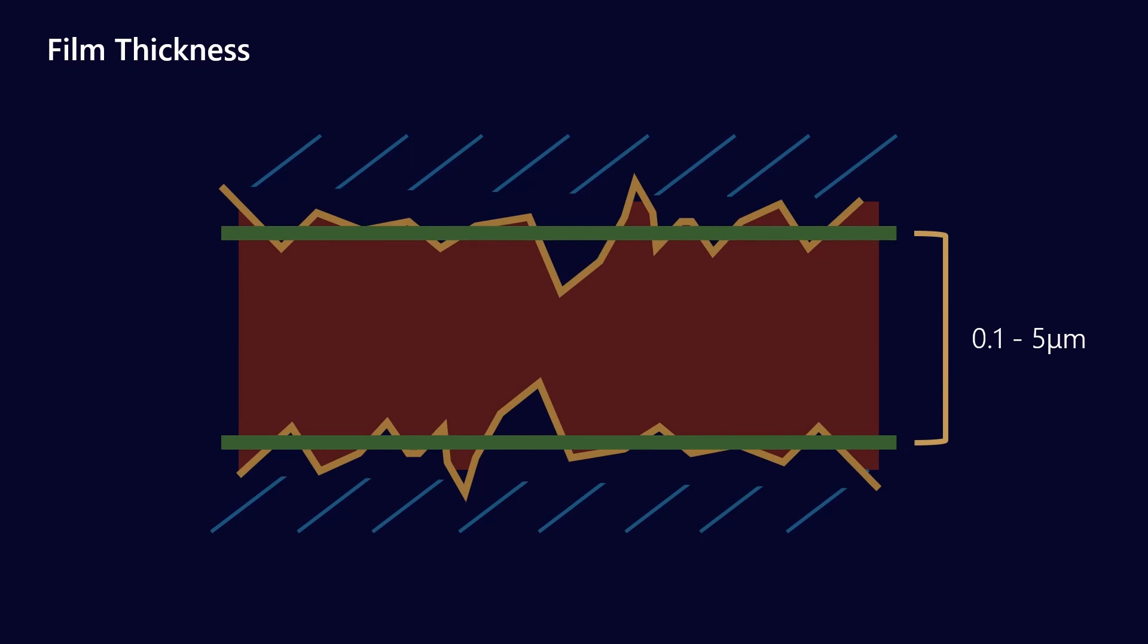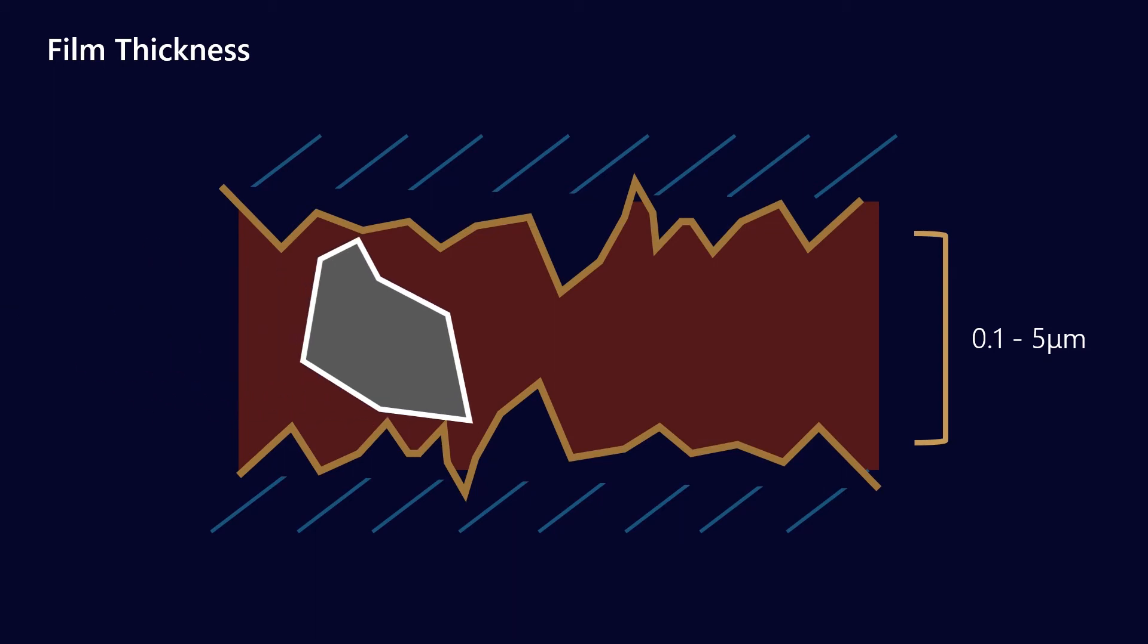Going back to that idea of film thickness, 0.1 to 5 microns, what does that mean for most of us in a practical sense? Well, it means that if we have contaminants that are in this order of magnitude, they can become a real problem because contaminants of those sizes can cause three-body erosion. So we can start to erode the surfaces, and that obviously is the catalyst for wear.